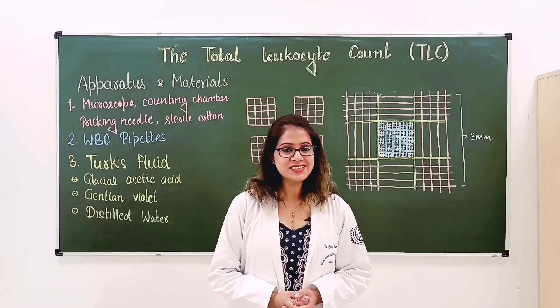Here we can see black dots visible in the WBC squares — these are the WBCs. They are refractile, unlike dust particles, and there is a white halo around them. So these are the WBCs — they appear as black particles when viewed under the microscope.